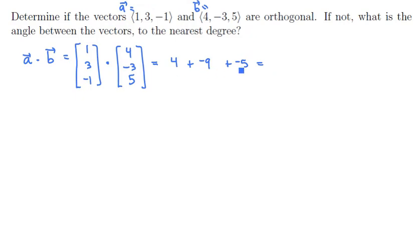4, minus 9, minus 5, is negative 10. Note that this is not 0, and so we know that the two vectors A and B are not orthogonal. However, since negative 10 is a negative number, we do know that the angle between them is obtuse.